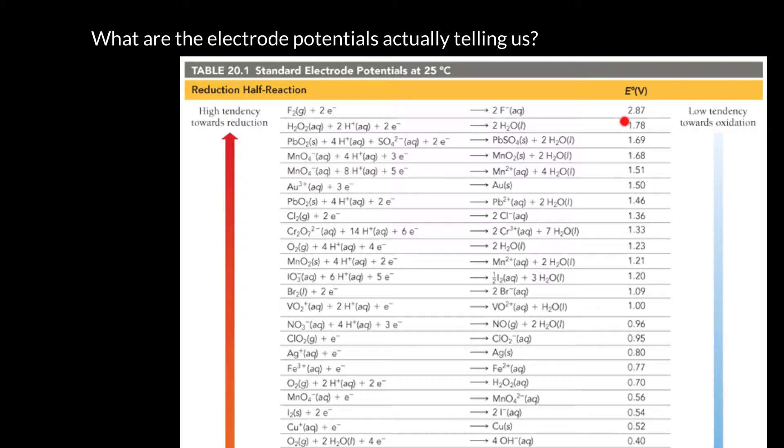So it has a very high voltage. That tells us that the electrons are definitely pulled strongly in this direction. And so this is a very favorable reaction. So that means that fluorine is really good at pulling electrons towards it and converting them into fluoride ions.